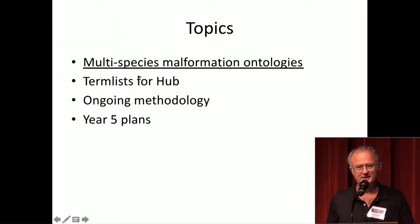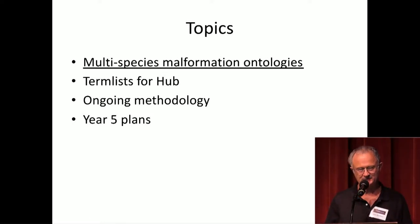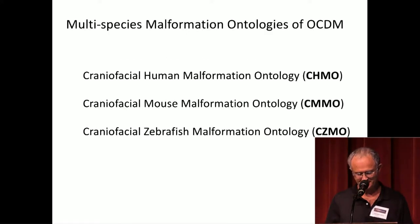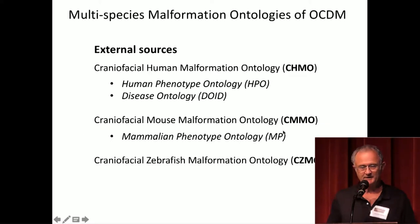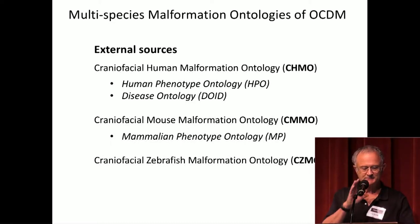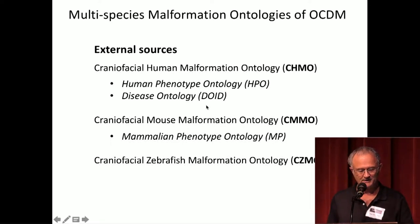I'll talk a little about the malformation ontologies. Onard has been doing all the content development, so for detailed questions I'll refer you to him. There are three ontologies, somewhat similar to each other, for human, mouse, and zebrafish. Wherever possible, Onard uses terms from external sources. For the human there's the Human Phenotype Ontology (HPO) or the Disease Ontology; for the mouse, the Mammalian Phenotype Ontology. He hasn't found one for zebrafish, so he's modeling a new one based on the others and consulting experts in the literature.